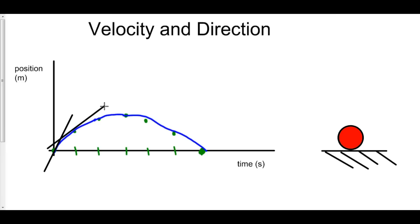At time one, it's going a bit slower. At time two, it's going a bit slower, like right here. And finally, at time three, where it reaches its maximum point, the velocity is zero.